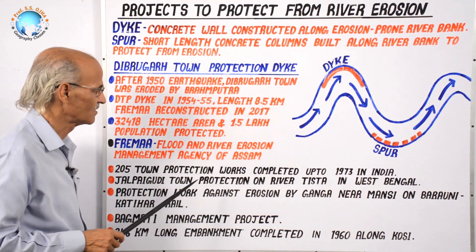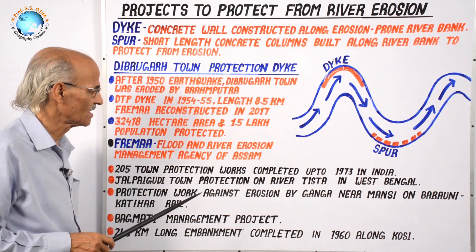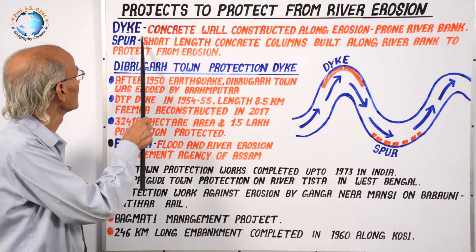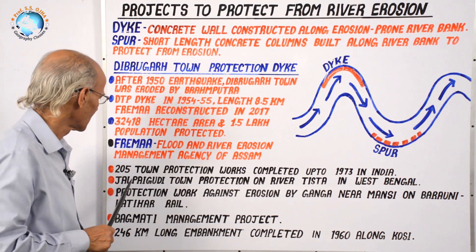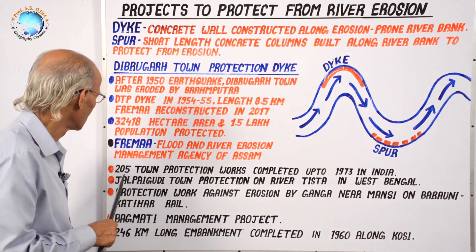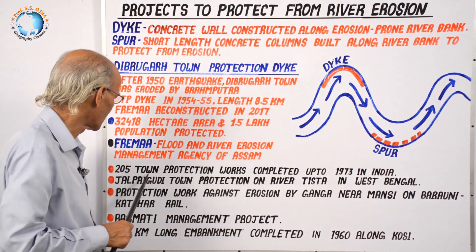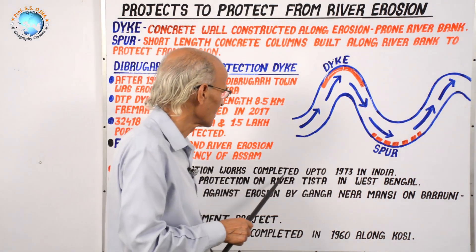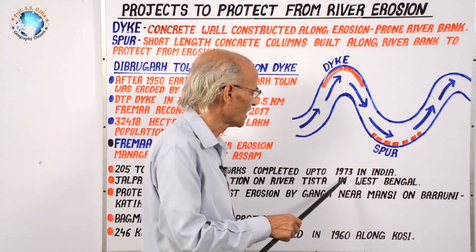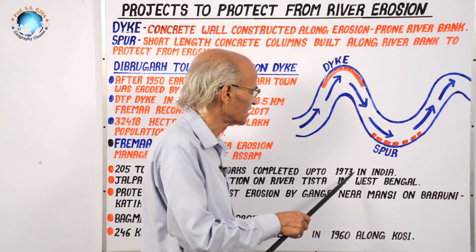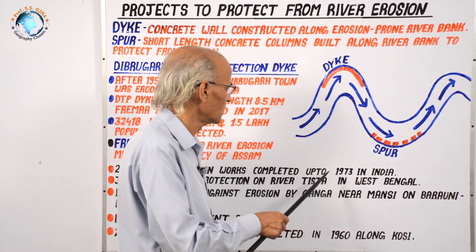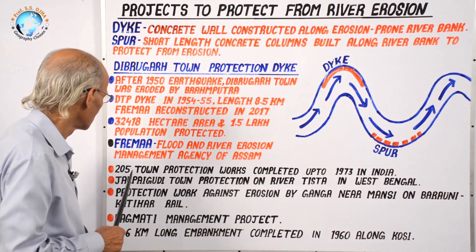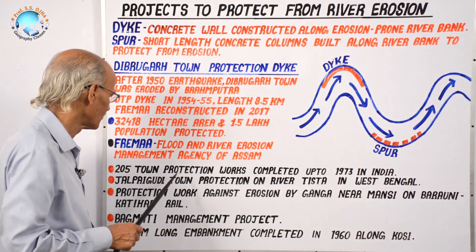Likewise, a number of towns have been protected in India and all over the world by construction of dikes and spurs. About 205 town protection works were completed in India up to 1973 — though that data is old and should be renewed. At present, more than 1,000 towns have been protected.